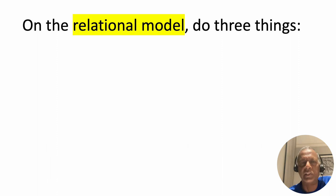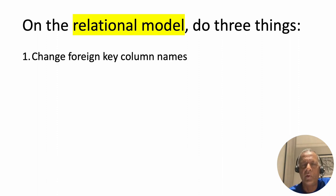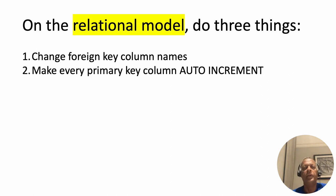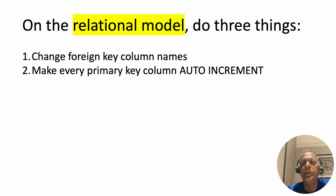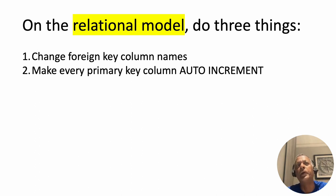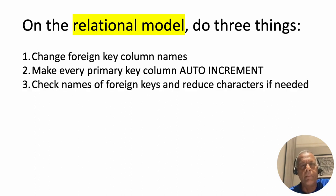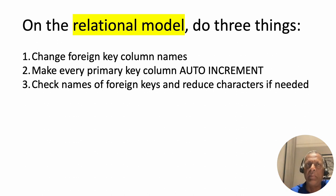On the relational model, we are going to do three things. First, we are going to change the foreign key names as just discussed. Second, we are going to make every primary key column auto-increment. Third, we are going to check the names of the foreign key constraints — behind the scenes each constraint has a name — and reduce the number of characters if needed.